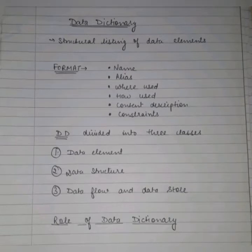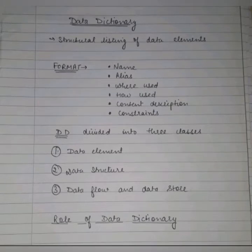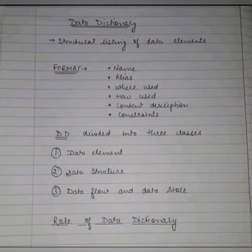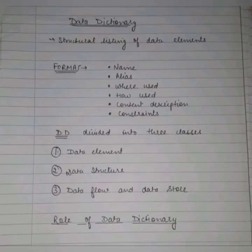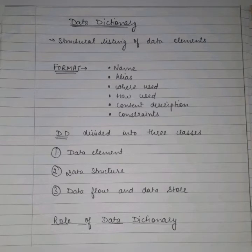A data element is the smallest unit of data that provides no further decomposition. For example, a date consists of a day, month, and a year — this is a single data element; we can't decompose it further. A data structure is a group of data elements handled as a unit, which has basic logical and mathematical organization — just like an array of elements. Data flow and data store are data structures at rest, meaning they show relationships among structures.